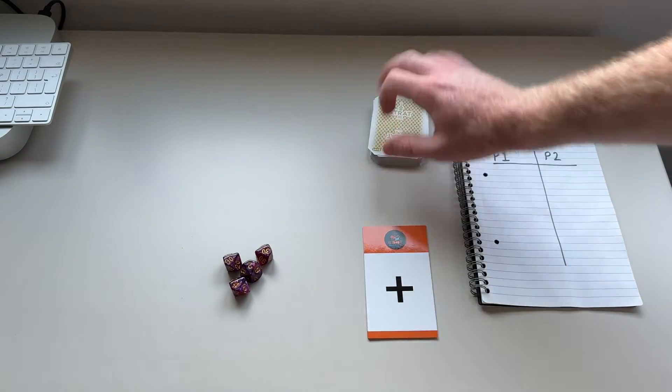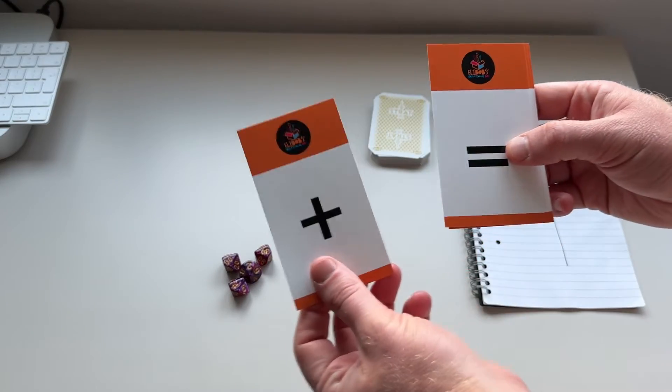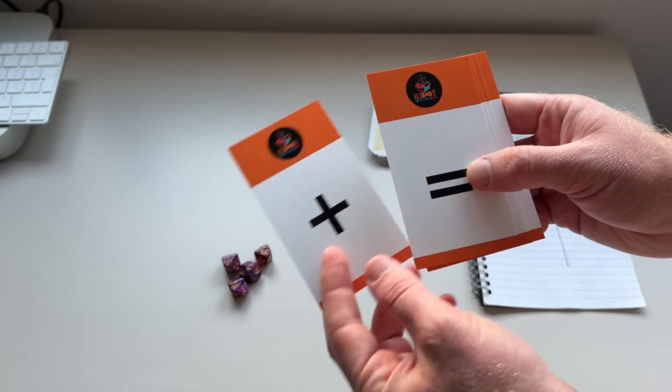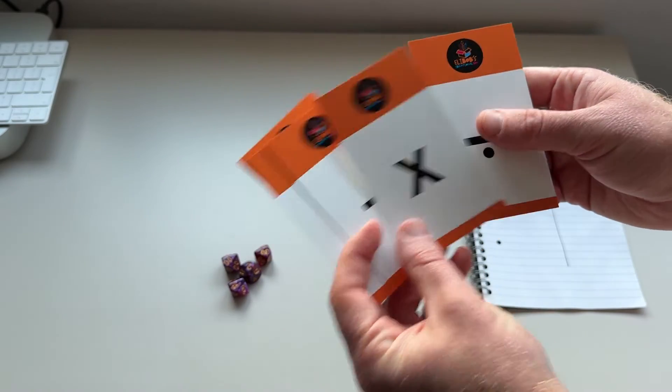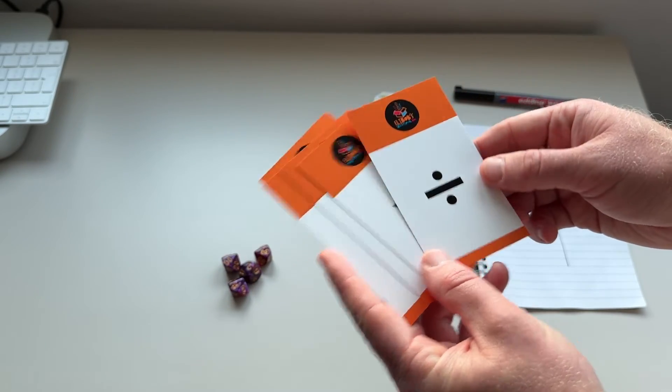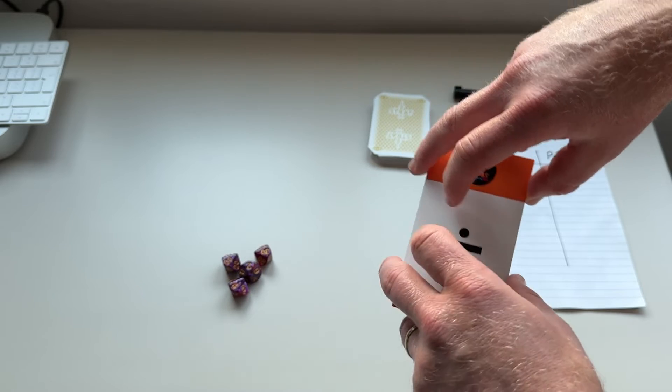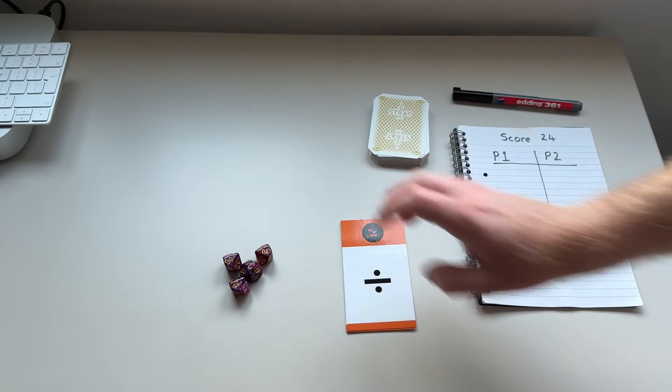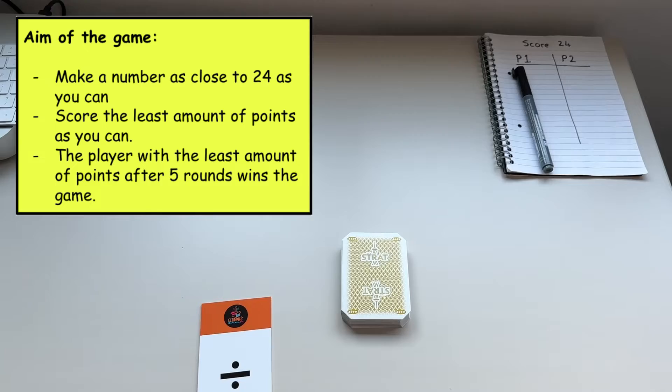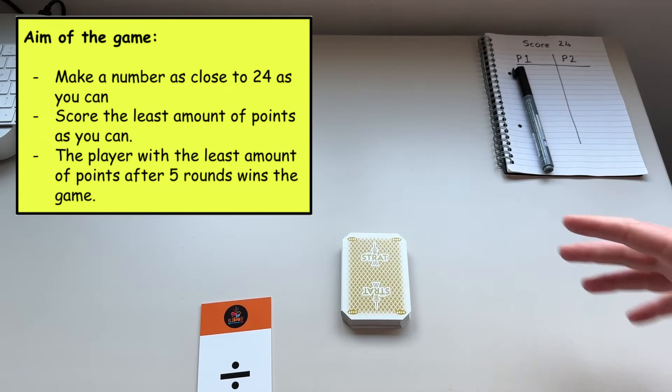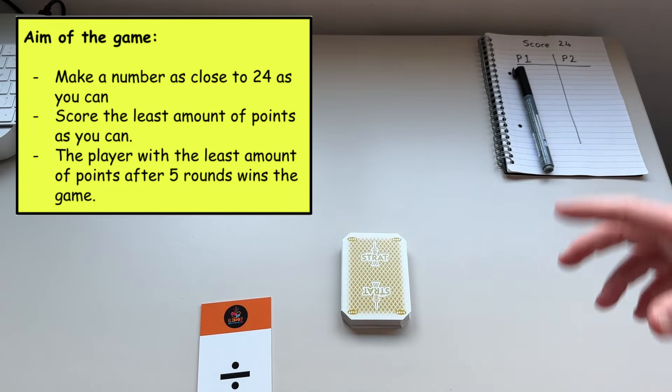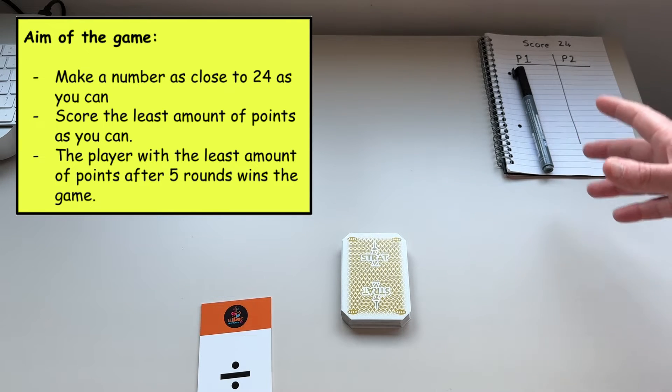You're also going to need some maths operation cards. So I've got a plus sign, an equal sign, a takeaway, a multiplication, and a division sign. If you don't have these cards, then just write them on a piece of scrap paper and it works just as well. So the aim of Score24 is to try and get as close to the number 24 as you can.